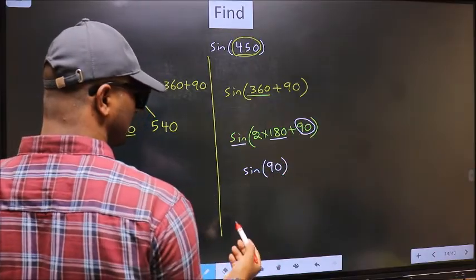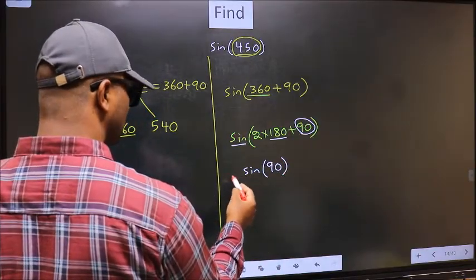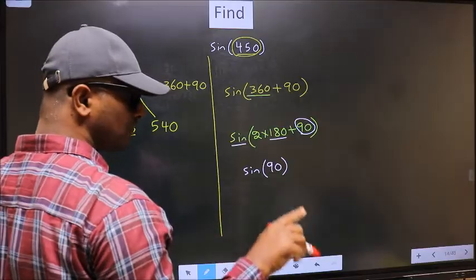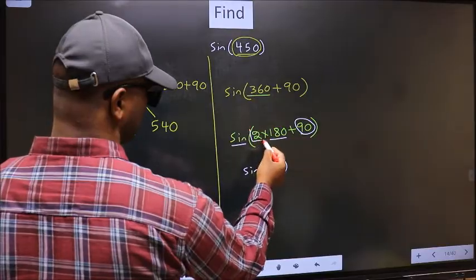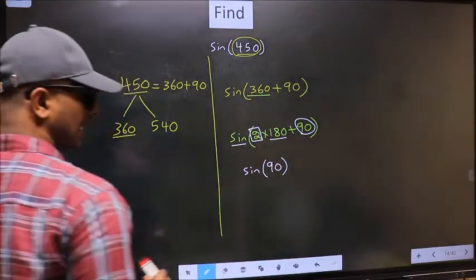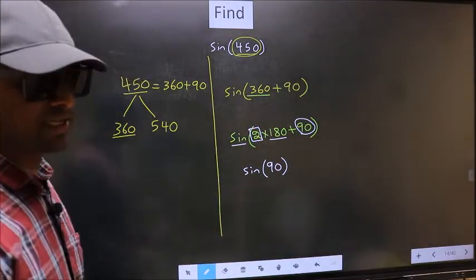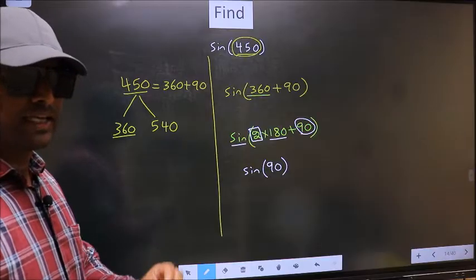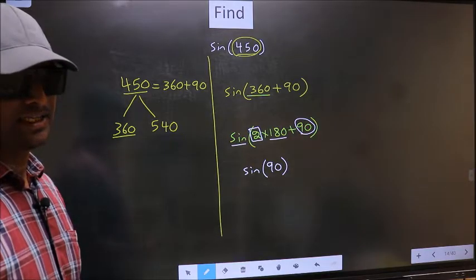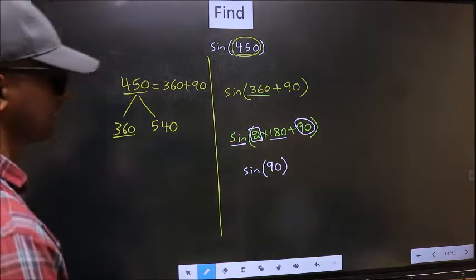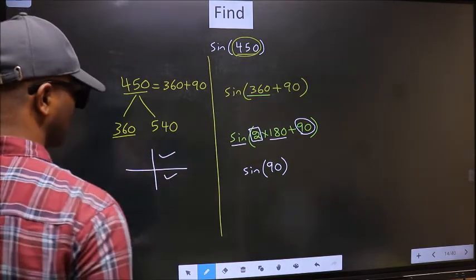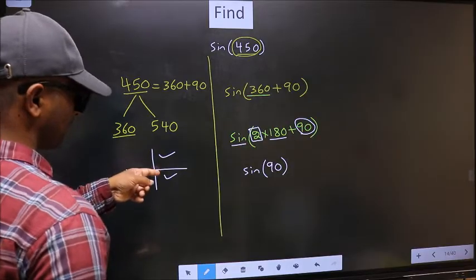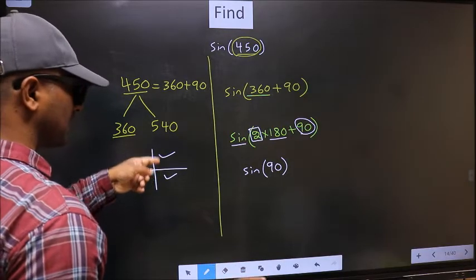Now the question is, will we get here plus or minus? To answer that, we should look at the number before 180. That is 2. And 2 is even. And all the even multiples of 180, they lie either in the first or in the fourth quadrant.